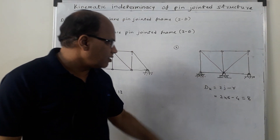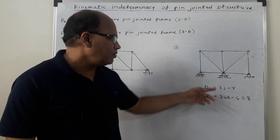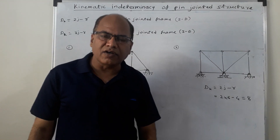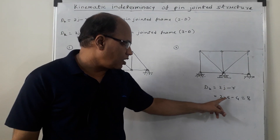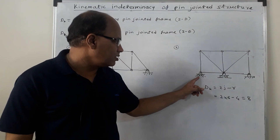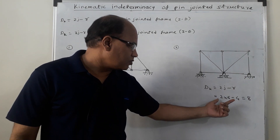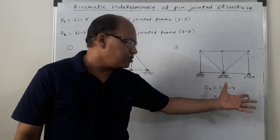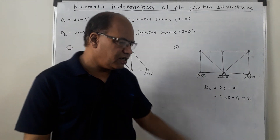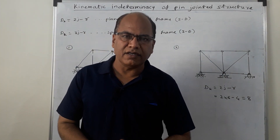For the second truss, again using dk = 2j − r: counting the joints — 1, 2, 3, 4, 5, 6 — there are 6 joints, so 2j = 12. The reaction components are 1, 1, and 2, totalling r = 4. Therefore dk = 2×6 − 4 = 8. The degree of kinematic indeterminacy in this case is 8.